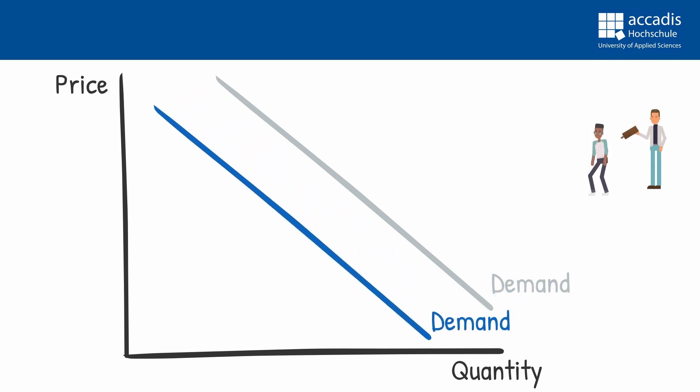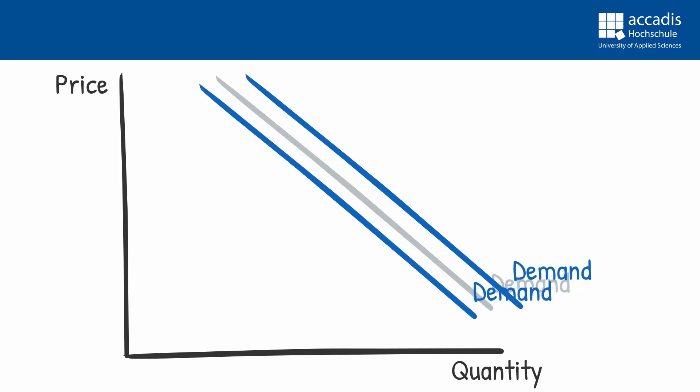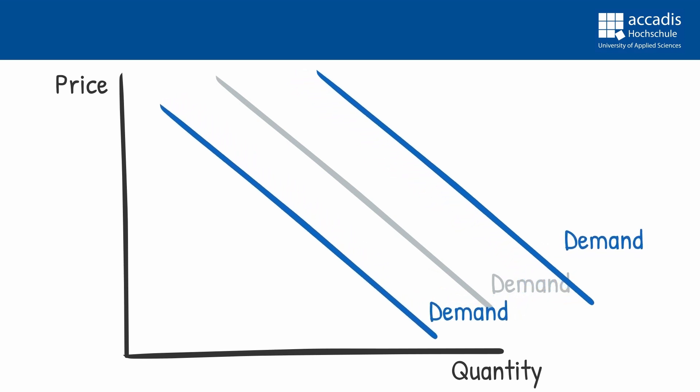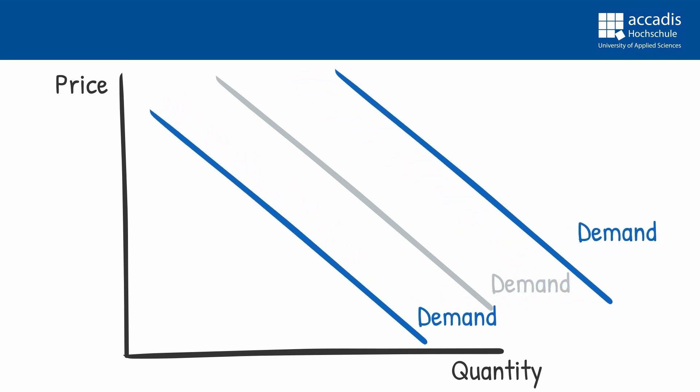There are multiple reasons why the demand curve may shift up or down, such as changes in the prices of substitutes, complements, or changes in income. Ultimately anything that influences the willingness to pay of our consumers will shift the demand curve.